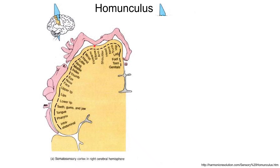We can look at this mapping from the somatosensory cortex to different parts of the body, and this is what it looks like. This is the brain; this is the front part of the brain. The somatosensory cortex is located in this strip in the parietal lobe, and if we take a coronal section passing through the somatosensory cortex, this is the image that we would get. This is one hemisphere of the brain, and here we can see a mapping of different regions of the somatosensory cortex to different body parts.